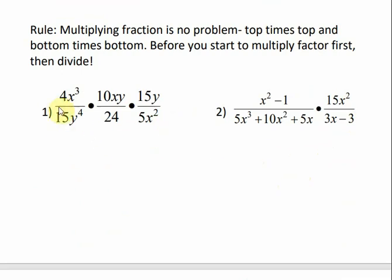In number one, we have a bunch of monomials. You could multiply everything together first and then reduce, but that makes our numbers really big. So let's reduce what we can reduce first. Anything that I see that's the same in the numerator and the denominator, as long as they're not connected to anything by pluses or minuses, we can cancel out.